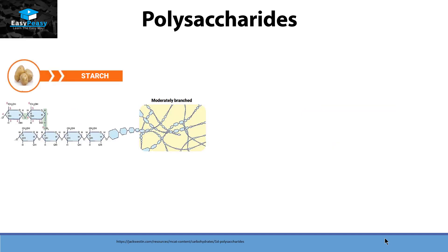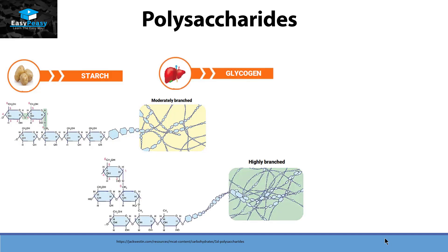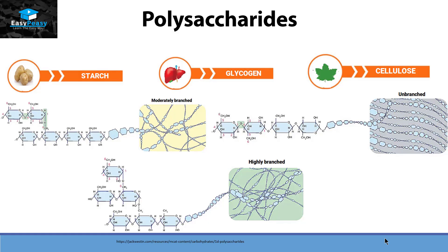Polysaccharides can also be differentiated on the basis of their branching system. It can be moderately branched like in starch, highly branched like in glycogen, or unbranched like in cellulose. All three compounds are different, have different functions, and are present in different locations, but they are all made up of glucose.